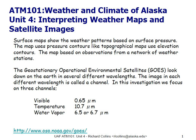Surface maps show the weather patterns based on surface pressure. The map uses pressure contours like topographical maps use elevation contours, and the map is based on observations from a network of weather stations. Just as in a topographical map we have elevation contours and mountains and valleys, in surface weather maps we have high and low pressure systems sitting in the valleys and peaks of the pressure contours.